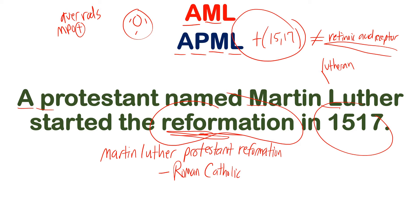Let's go over it again. AML — acute myeloid leukemia. A stands for Auer rods — the little rods in the myeloblast. M stands for MPO positivity, the enzyme in high concentrations in neutrophils and myeloblasts, used to break down microbes and pathogens. Those are the two important things that tell you you're dealing with AML.